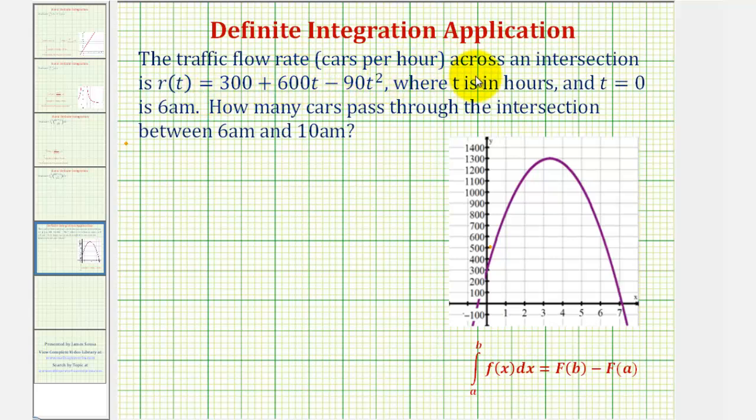The traffic flow rate in cars per hour across an intersection is given by r of t, where t is in hours and t equals zero is 6 a.m. We want to determine how many cars pass through the intersection between 6 a.m. and 10 a.m.